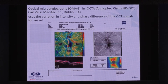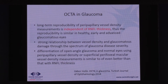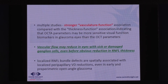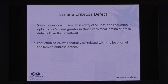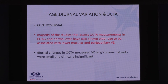The advantages are that OCTA is repeatable in both healthy and glaucomatized eyes, with better discriminative power. Multiple studies on OCTA show a stronger vascular-function association compared to a thickness-function association. Vascular flow may reduce in eyes with sick or damaged ganglion cells even before there is obvious reduction in RNFL — which is a significant advantage.